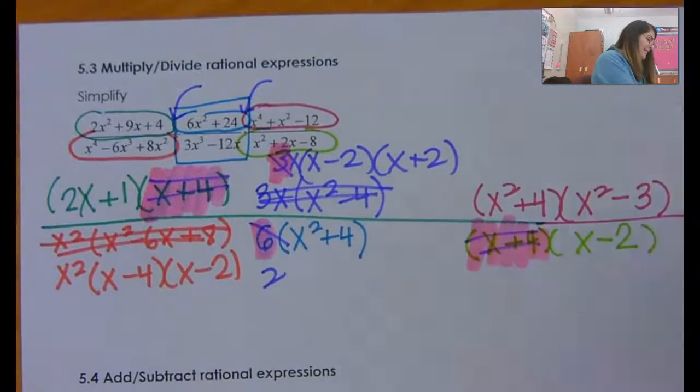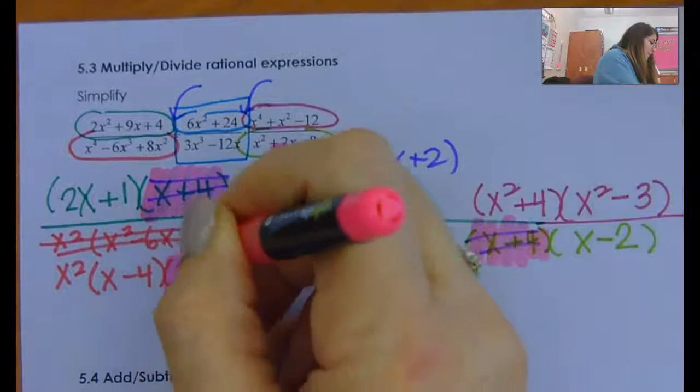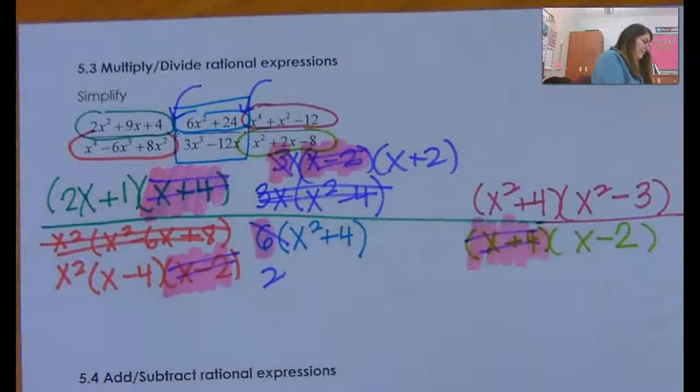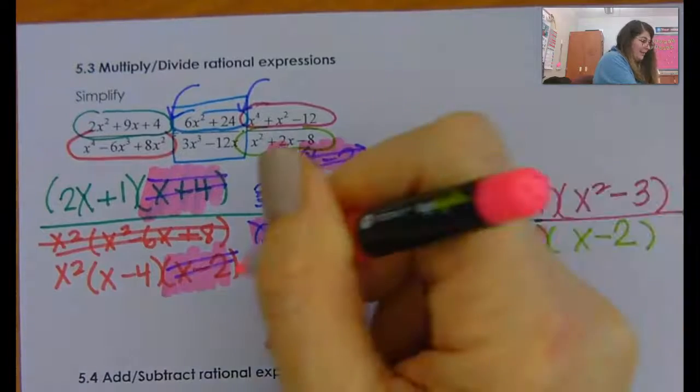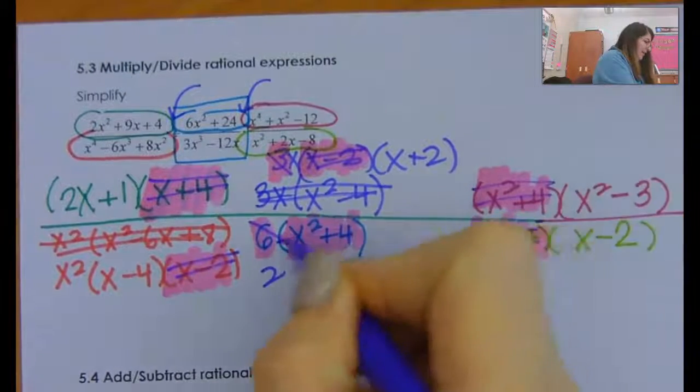And what else is here? I've got an x minus 2, gone. And I have an x squared plus 4 in the numerator and in the denominator. Gone and gone.